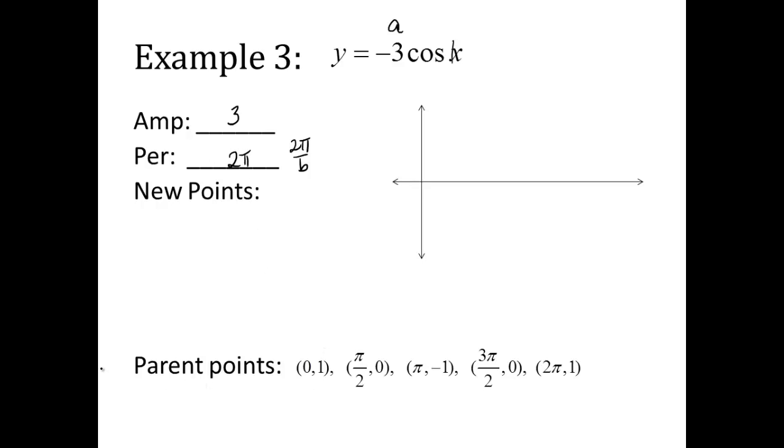Alright. Here's my parent point for cosine, as we just did. Now we're going to just, again, y times the a value. Remember, not the absolute value of a, but just a as it is. So (0, -3), that 1 multiplied by negative 3. (π/2, 0), 0 times negative 3 is still 0. At π, negative 1 times negative 3 is a positive 3. (3π/2, 0), 0 times negative 3 is still 0. And then lastly 2π, 1 times negative 3 is back at negative 3.